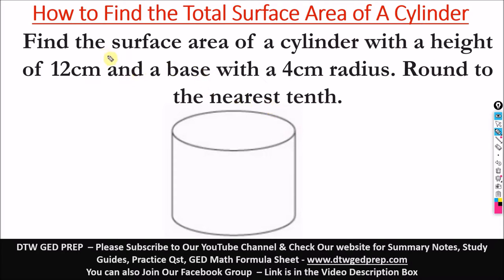So we have a question here. It says, find the surface area of a cylinder with a height of 12 cm. So a cylinder has a height from here to here, 12 cm. That's from here to here. And a base with a radius of 4 cm, a base with a 4 cm radius.